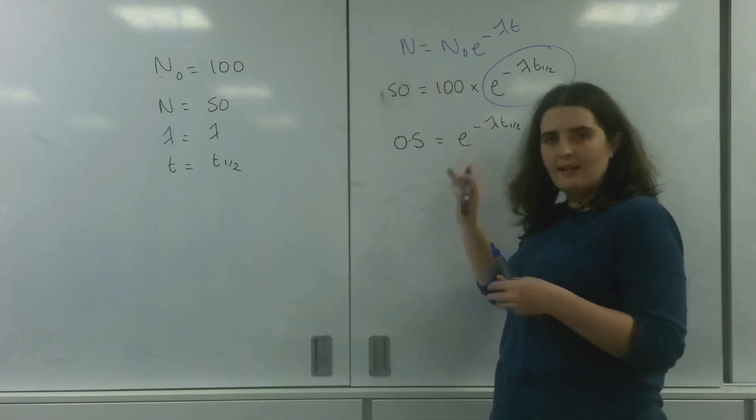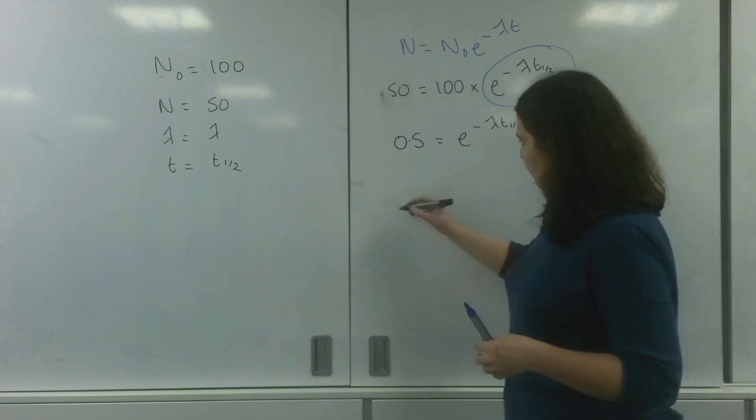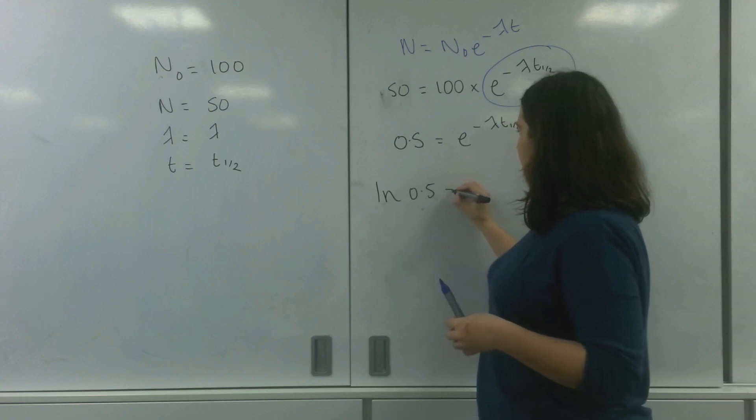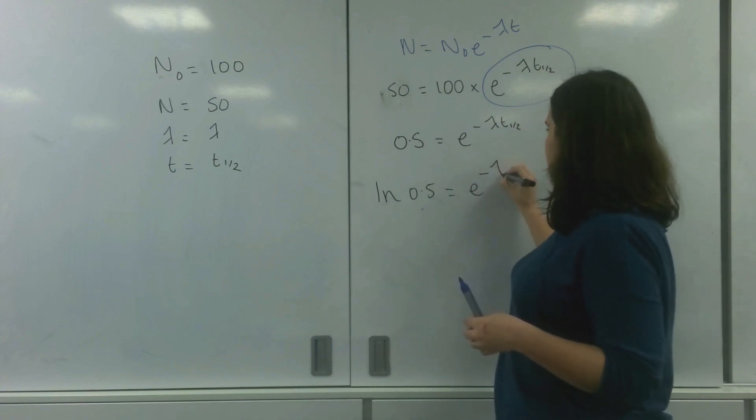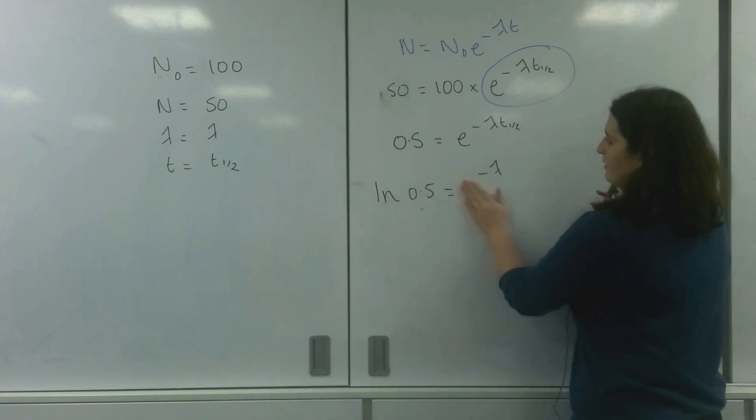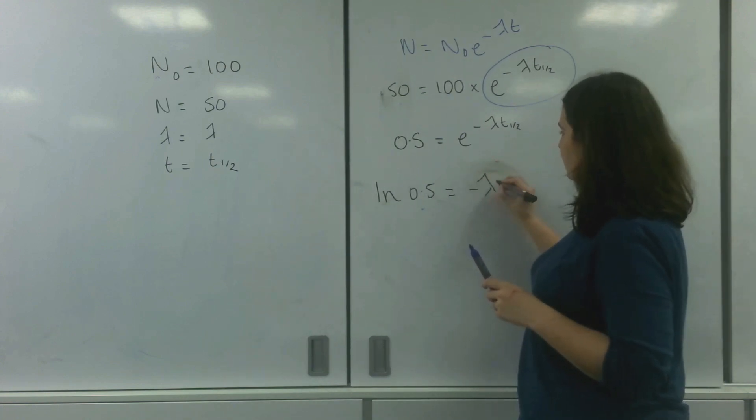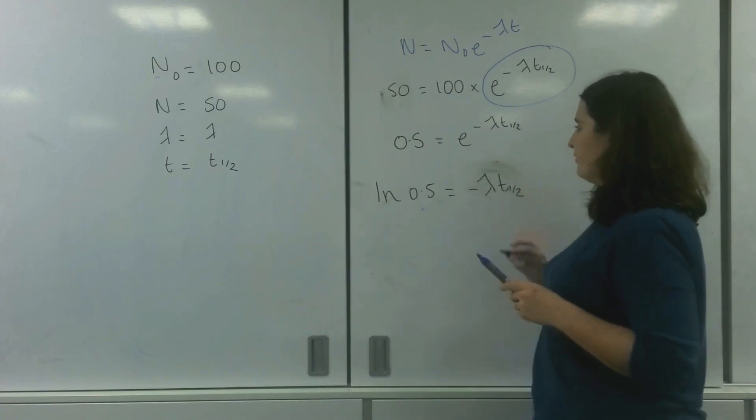And then to get rid of this e, I have to log all of them. So I'm going to go ln 0.5 equals e to the minus lambda... Oh, I apologize, it will get rid of that e there. Minus lambda t_1/2.